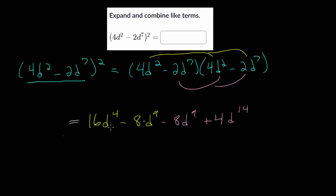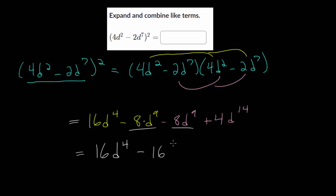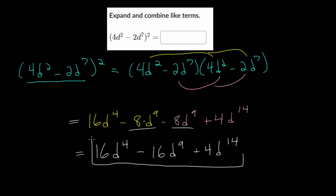We can simplify by combining the two middle terms since they are like terms — they both have d to the ninth. So we have 16d to the fourth; we're subtracting 8 of that term and then taking away 8 more of that same thing, so in total we are taking away 16 of the d to the ninth. And we have plus 4d to the 14th. So this should be our final answer.